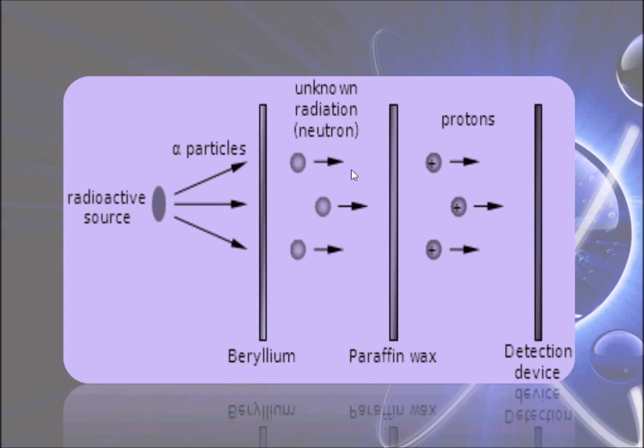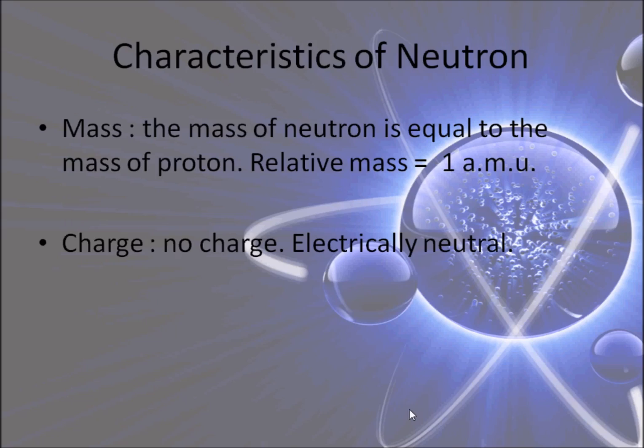And here the detection device which is also called a Geiger counter. This unknown radiation was being studied by James Chadwick and then afterwards he gave the name neutron, as these neutrons have a mass but don't have any charge. Let's come to the characteristics of neutron. Mass - yes of course, the mass of neutron is equal to the mass of proton, that is the relative mass is 1 amu. And the charge - as we all know that electron is a negative charge particle, proton is a positive charge particle, but neutron which resides in the nucleus of the atom has no charge. They are actually electrically neutral particles of the atom.